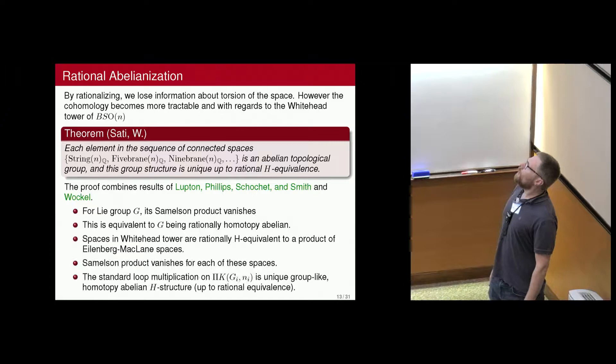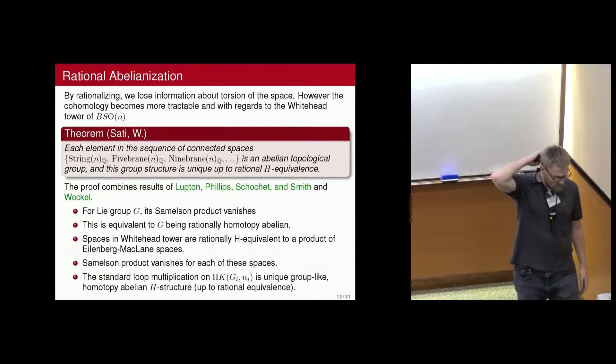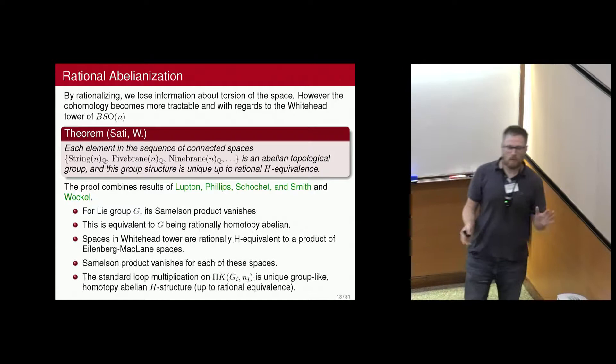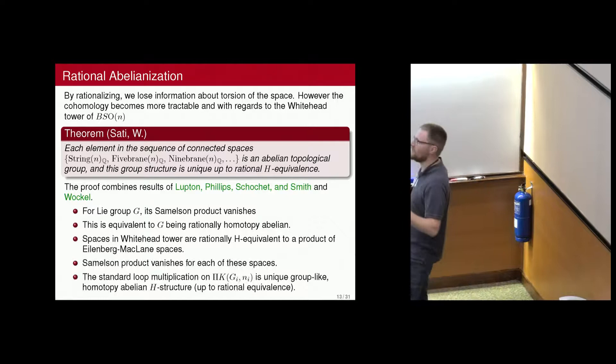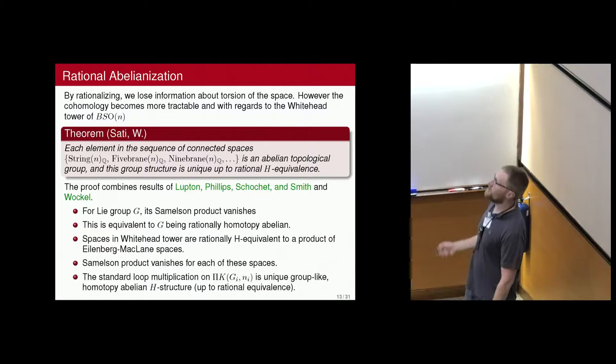What we wanted to do is look at these groups rationally, and nice things happen when they're rational. The space itself becomes very messy — you're not going to have a manifold, you can't expect anything nice geometrically. But the homotopy properties and cohomological properties are going to be much nicer.